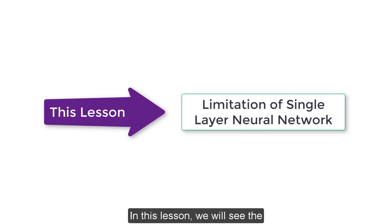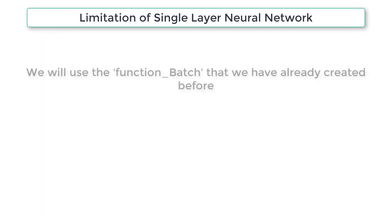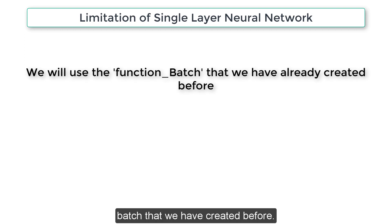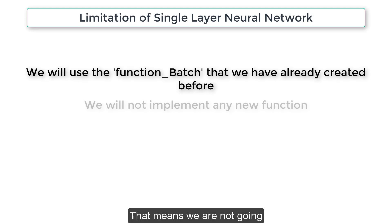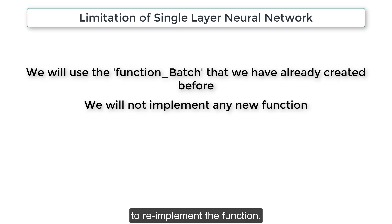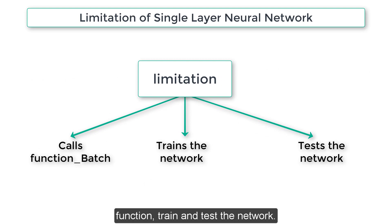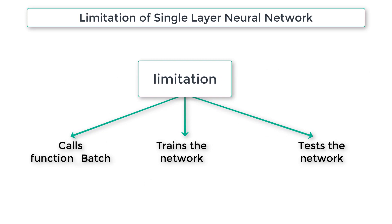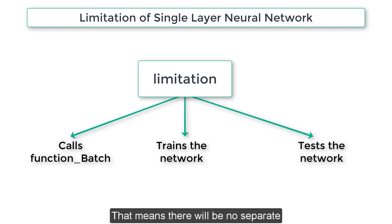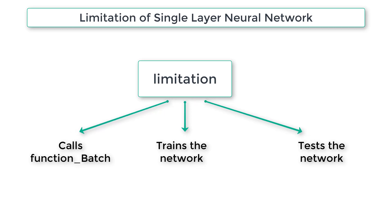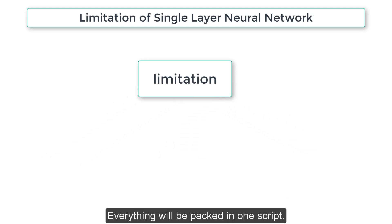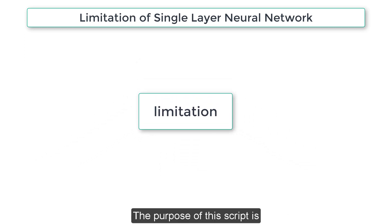In this lesson we will see the limitation of our single-layer neural network. We are going to use the batch function we have created before, so we are not going to re-implement it. We will write a script that calls this function to train and test the network - there will be no separate training and testing script. Everything will be packed in one script, and the purpose is to find out the limitation of a single-layer neural network.